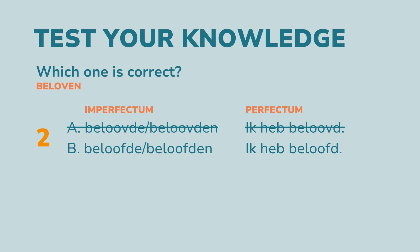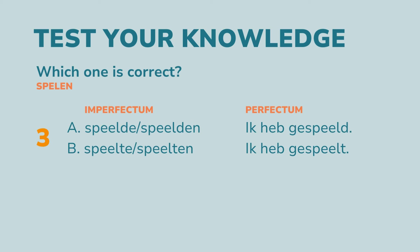Question 3: Which one is correct for 'spelen,' meaning 'to play'? A: speelde, speelden, and ik heb gespeeld. Or B: speelde, speelden, and ik heb gespeeld. It's A. The l is not part of ex soft ketchup, so it's the d you need to work with.